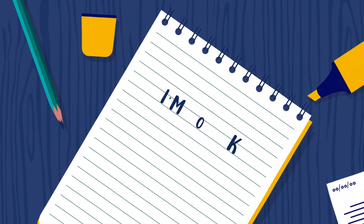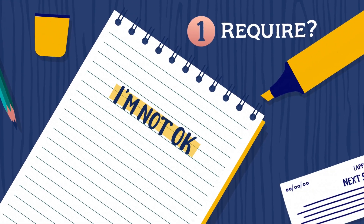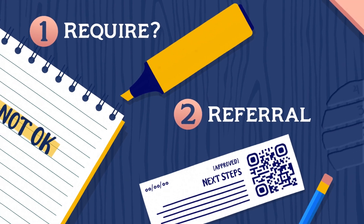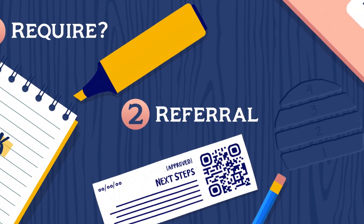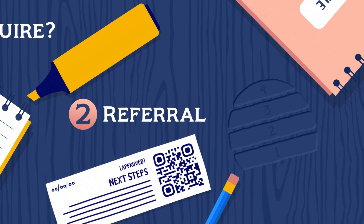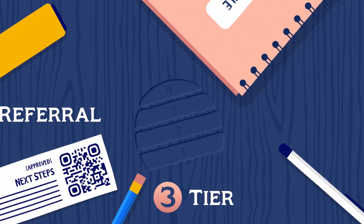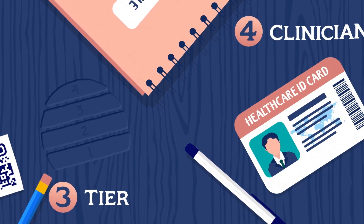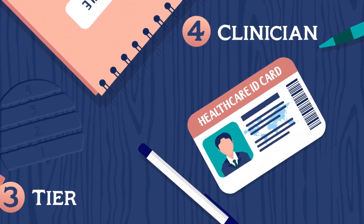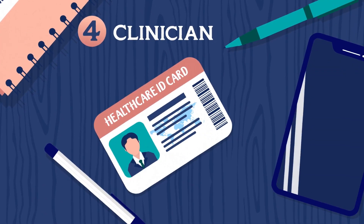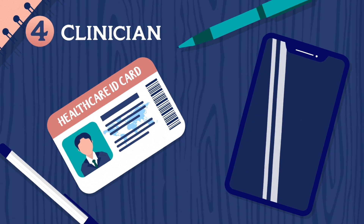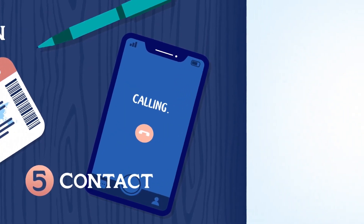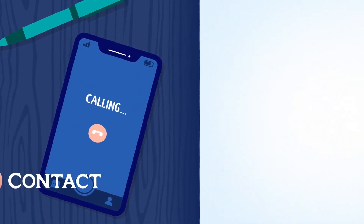In summary: ensure you need CAMHS. Get a referral from a health professional, preferably your GP. Ensure you access at the appropriate level or tier. Establish your clinician's name, contact details and professional role. Ensure you have emergency and out-of-hours contact details.